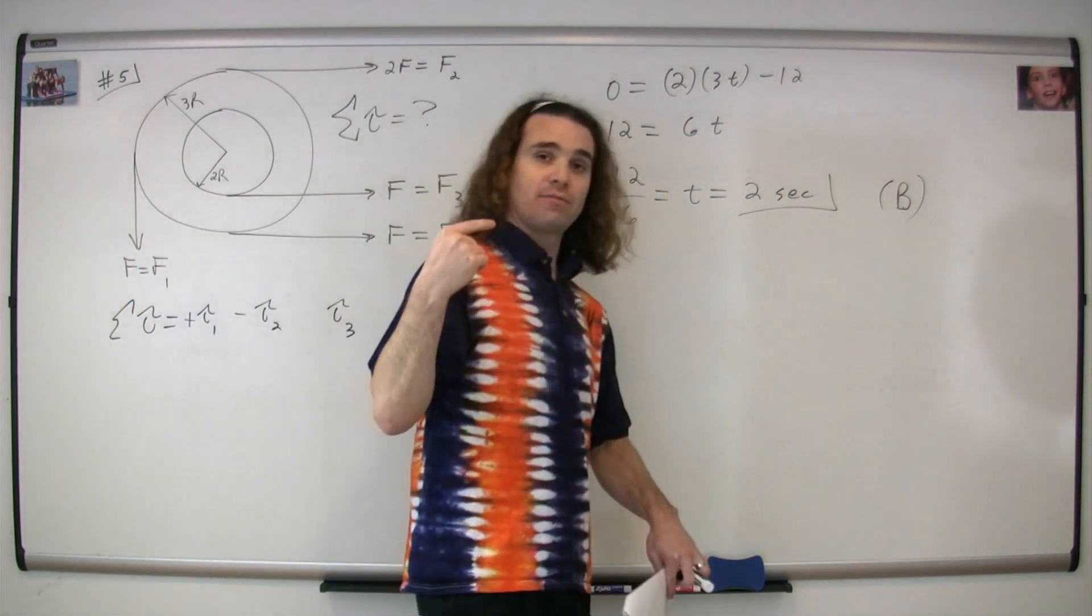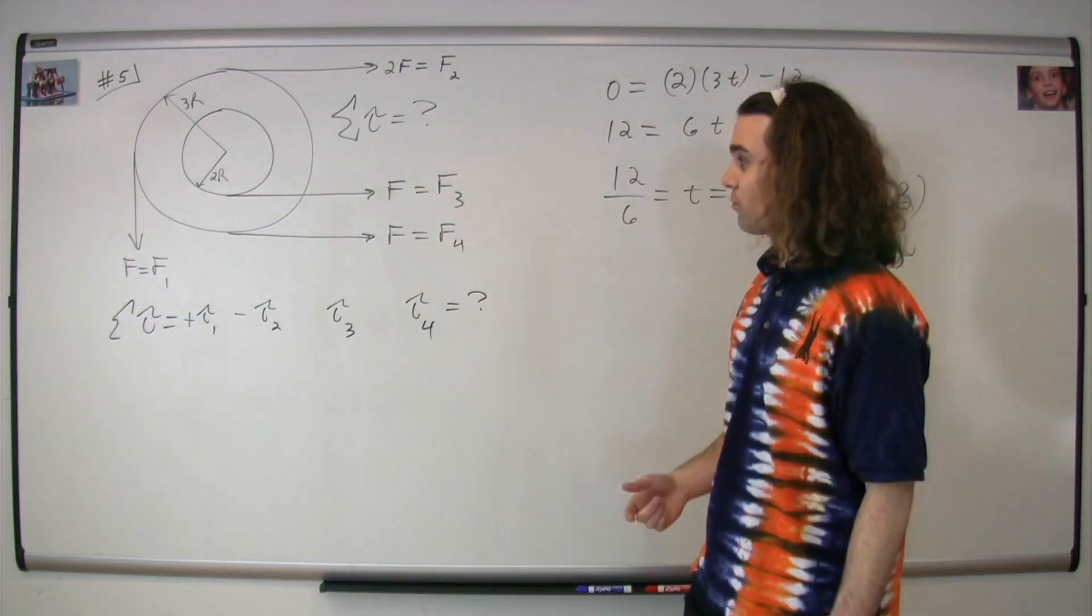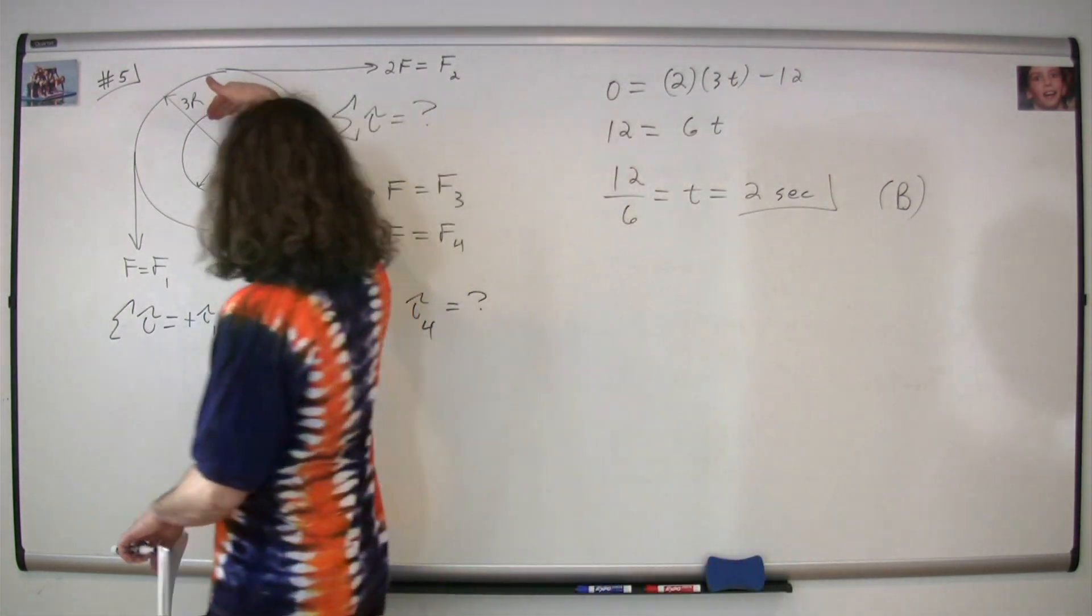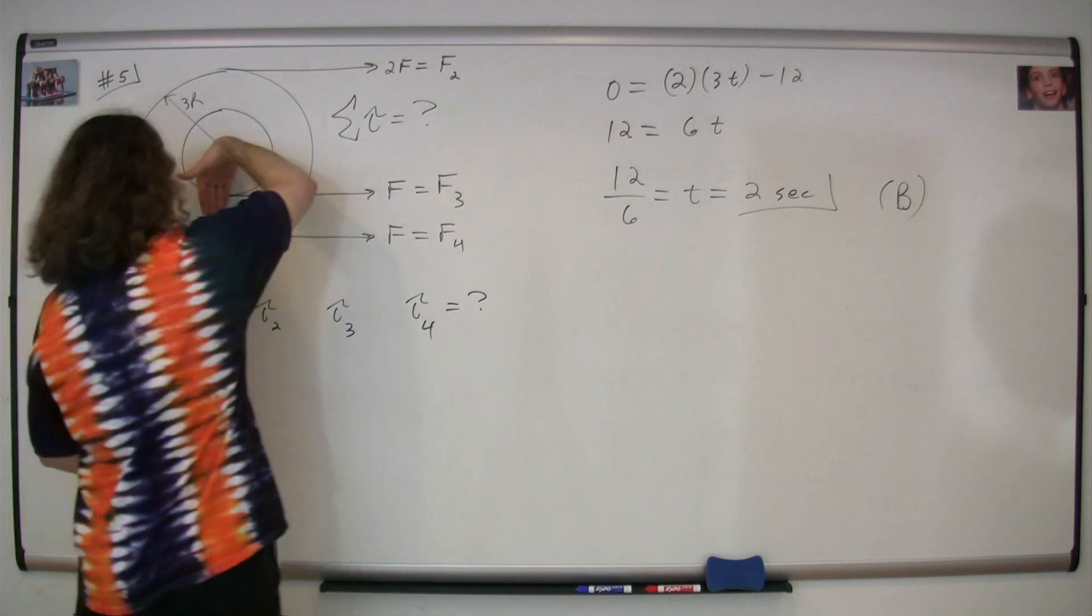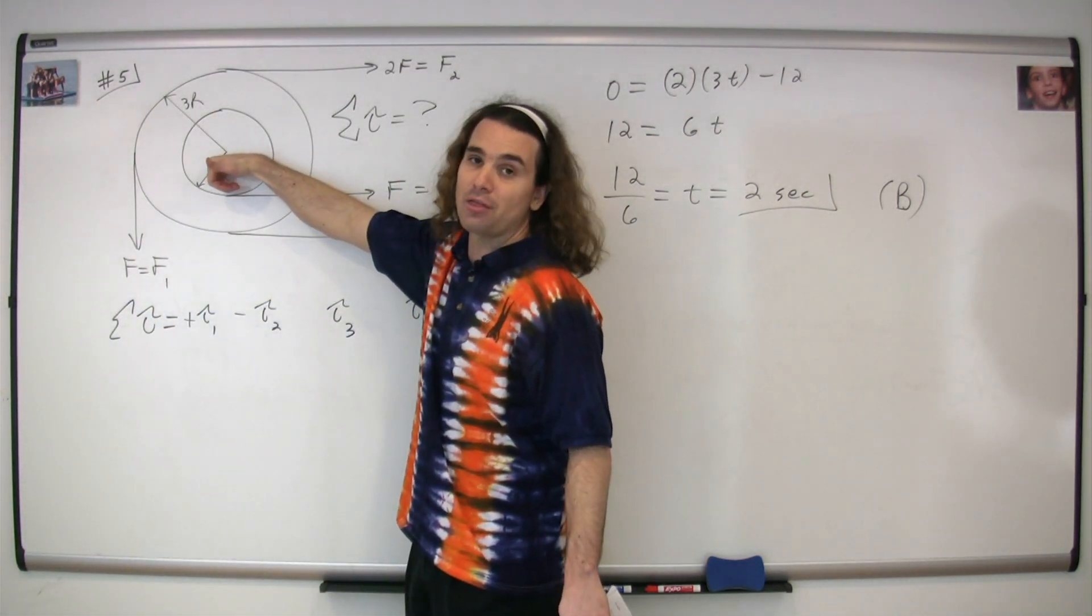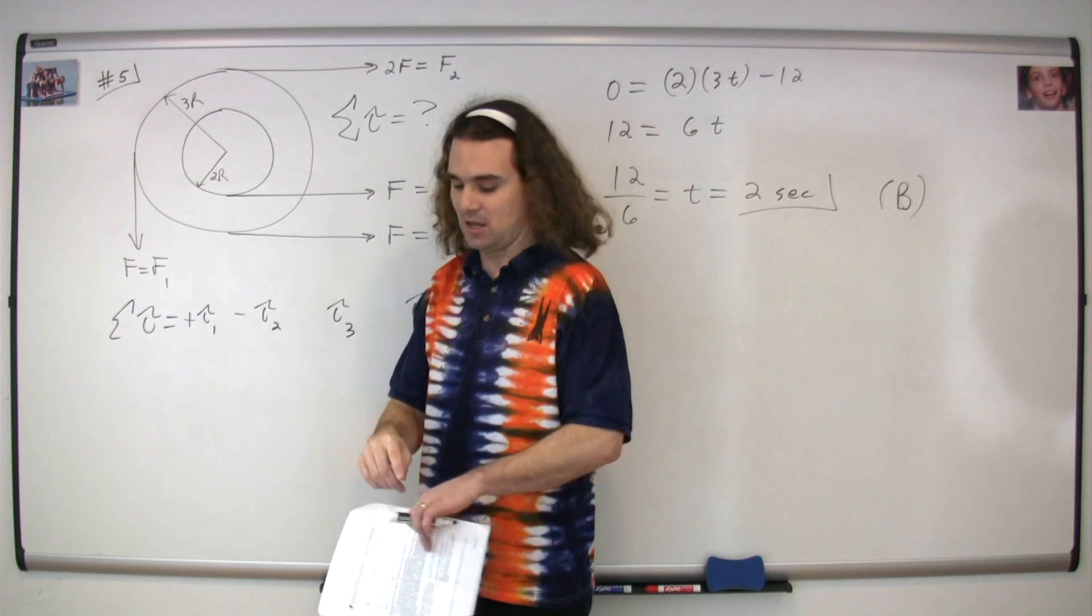For the torque due to force three and force four, we're going to do the right hand rule the exact same way. You start at the axis of rotation. You point your fingers along the lever arm. You curl your fingers in the direction of the force. Again, three and four are the same, and our thumb points out of the board, which again is positive.